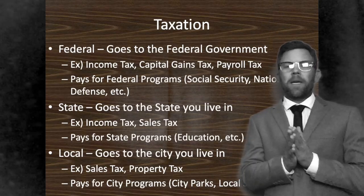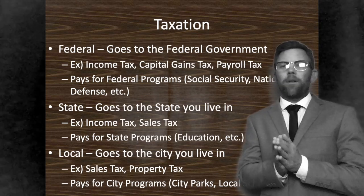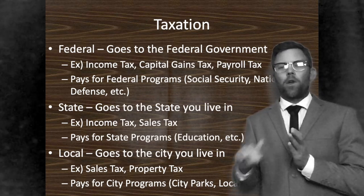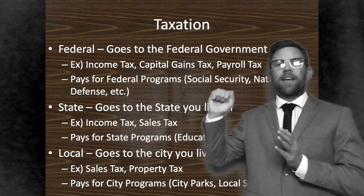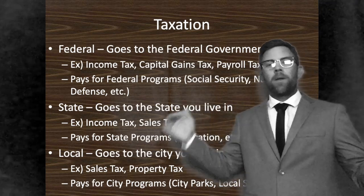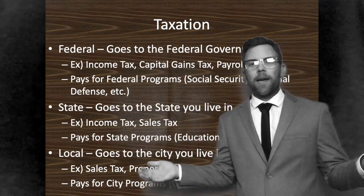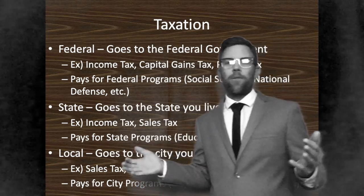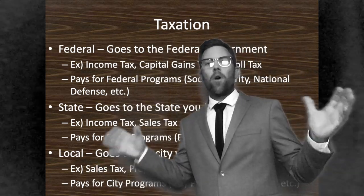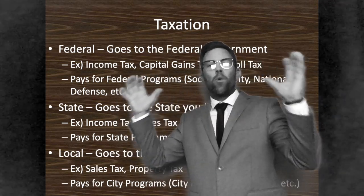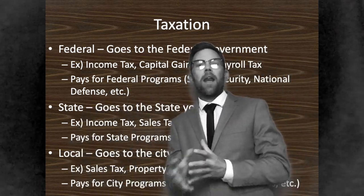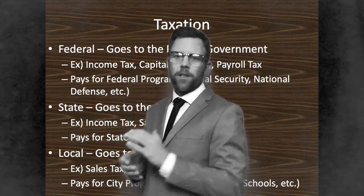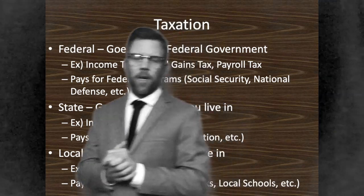What we're going to begin with are the different levels of government: local, state, federal. How do they collect taxes? What are those taxes paid for? Do all taxes get pooled together and then everybody gets to pull from it, or are they different levels? Let's get into those answers.